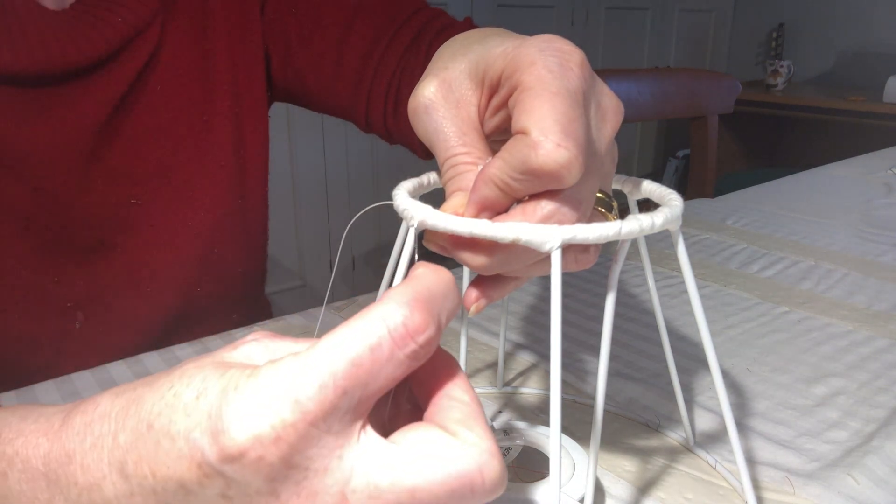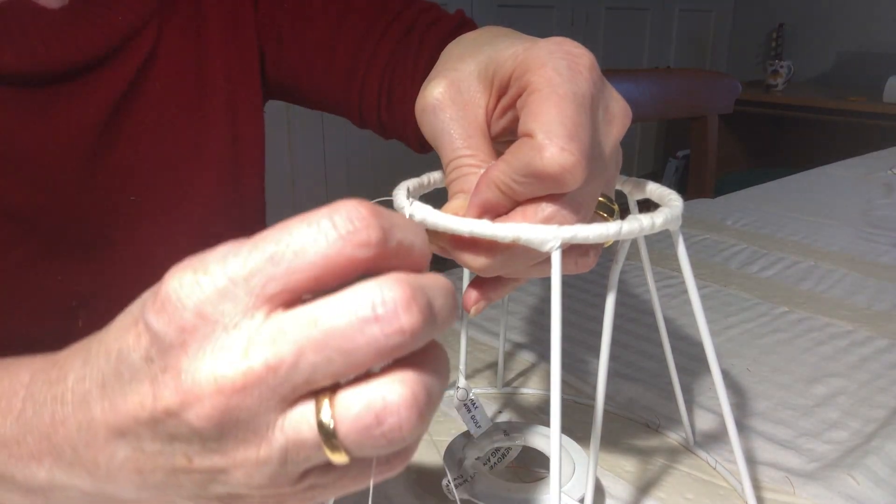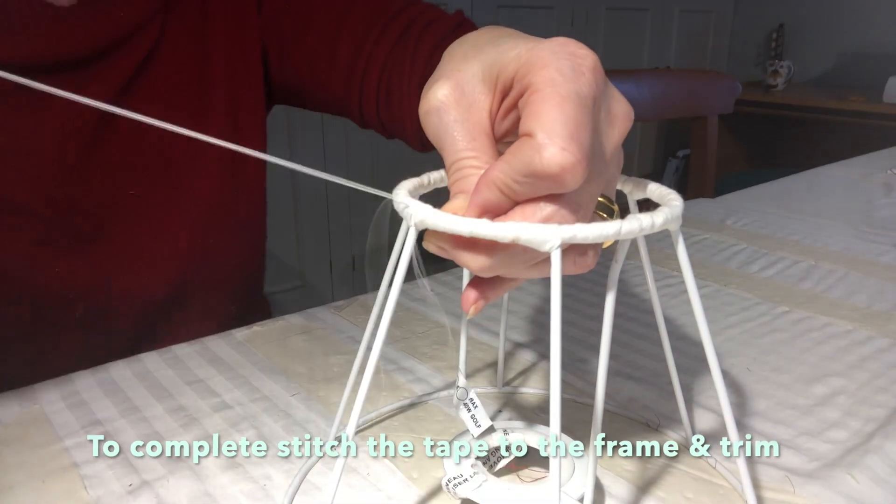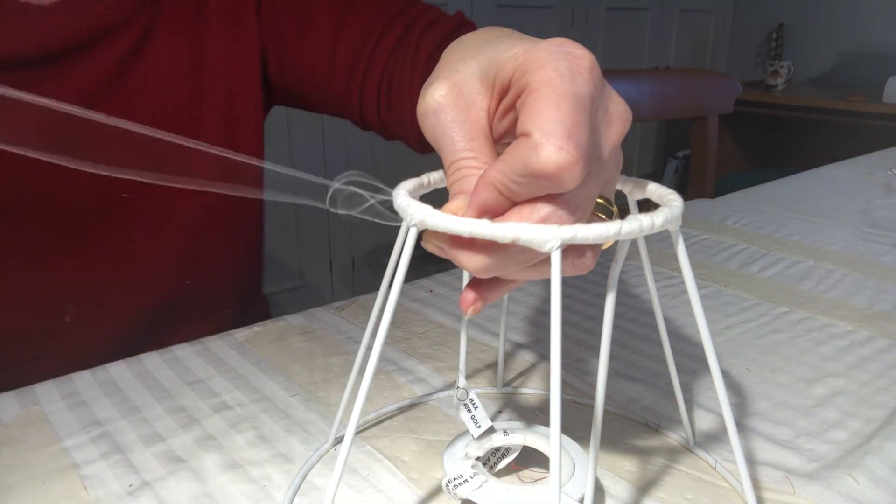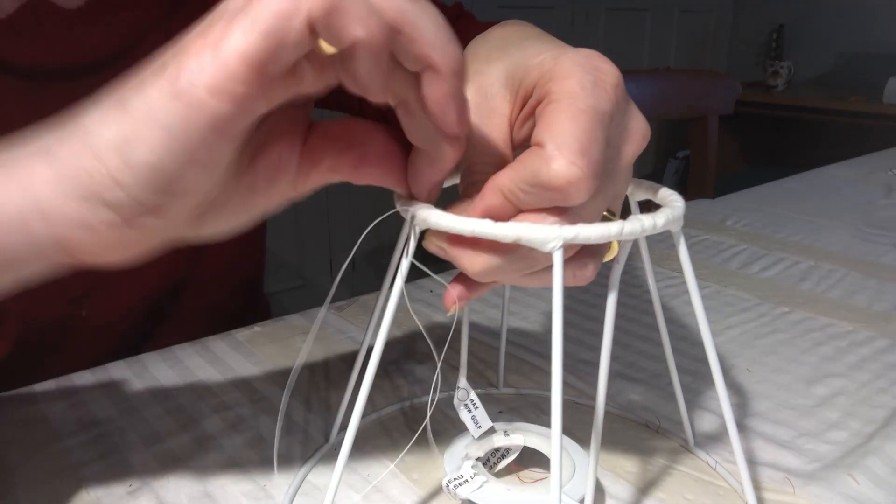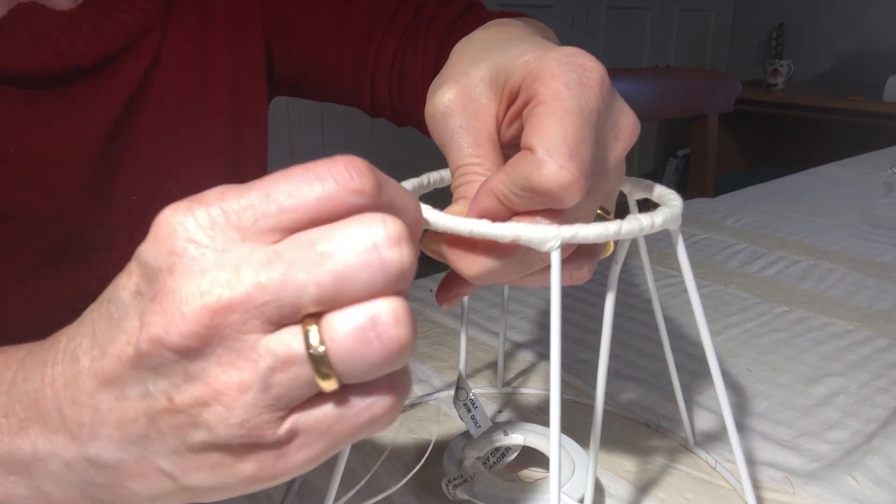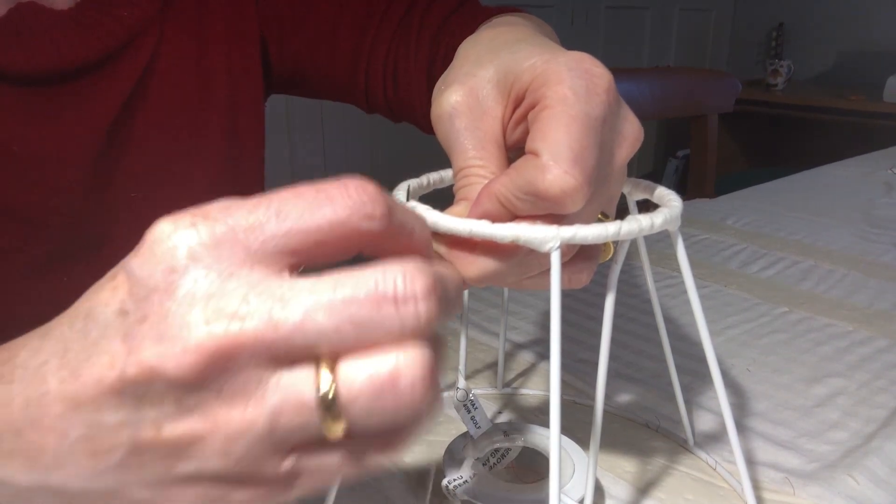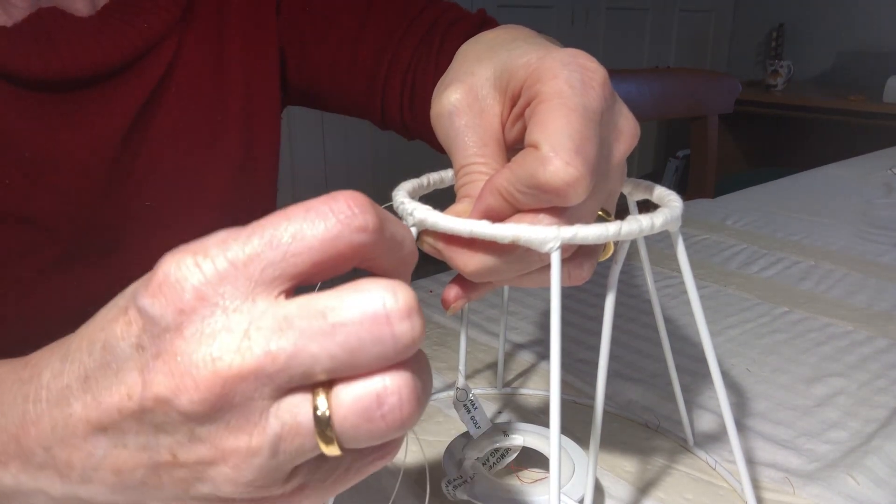To complete, stitch into one edge of the tape with a couple of backstitches and loop through to secure. Pop a couple of holding stitches into the middle of the tape and finish with a couple of backstitches into the other edge, looping through to secure, and then thread the needle back through the tape before cutting. Now your frame is ready and you are ready to create a handmade lampshade.